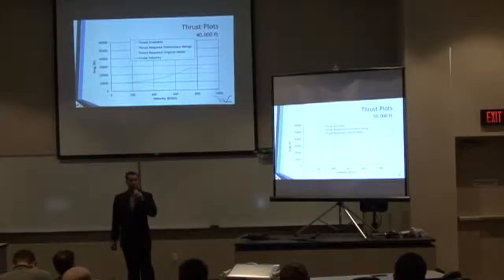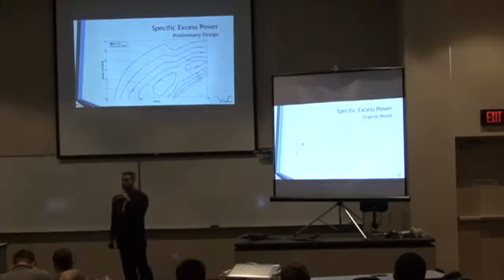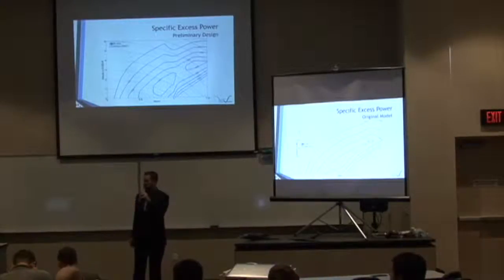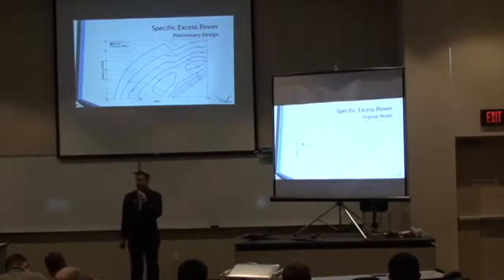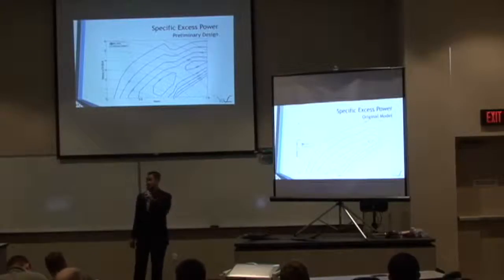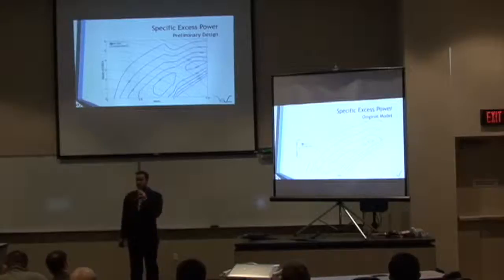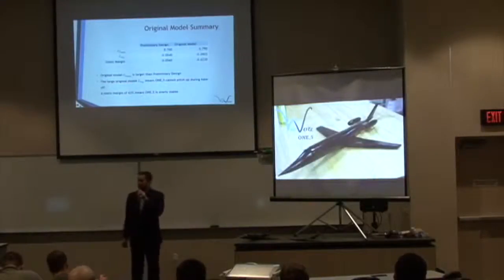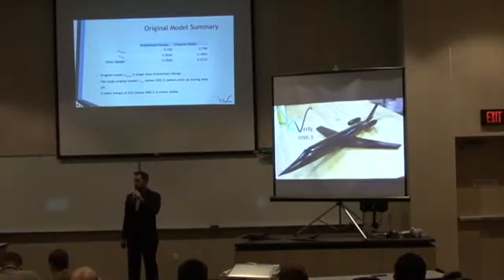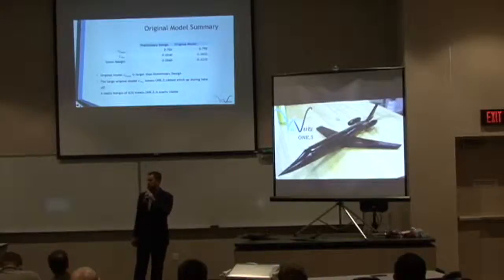At 50,000 feet, we still have excess thrust. Combining all thrust required and thrust available plots into one non-dimensionalized specific excess power (Ps) plot, we show for each altitude and Mach number the plane's ability to change its energy state. The 0 feet-per-second contour indicates the absolute altitude ceiling. Most importantly for the original model, we can travel at our cruise velocity of Mach 1.4 at 40,000 feet, with an excess power of approximately 300 feet per second. In summary, the original model shows increased CL max from preliminary design, but CM alpha increased significantly due to an increased static margin from 5.6% to 62%. This increase in static margin will be addressed by Jonathan Johnson.